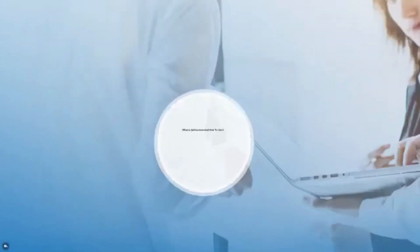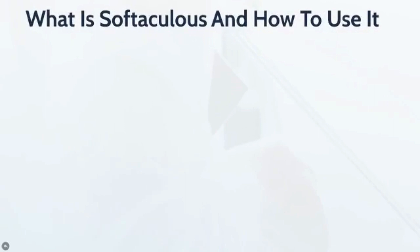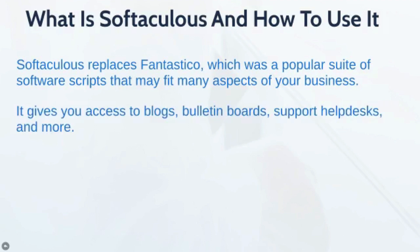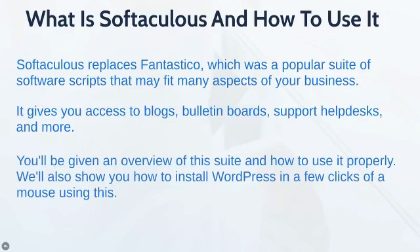Hello and welcome to video number five. In this particular video you're going to learn what Softaculous is and how to use it. Softaculous replaced Fantastico, which is basically a popular suite of software scripts you can build into your website — things like WordPress, Joomla, forums, and many other free scripts that you have access to without spending extra money. It gives you access to things like WordPress, blogs, bulletin boards, even support help desks and more. You'll be given an overview of this suite and how to use it properly, and we'll show you how to install things like WordPress in just a few clicks.